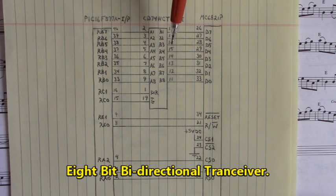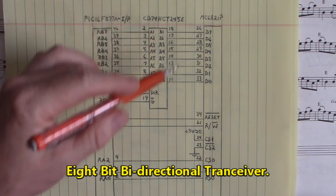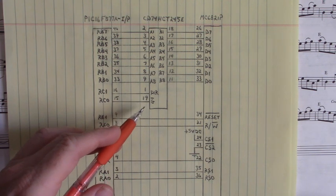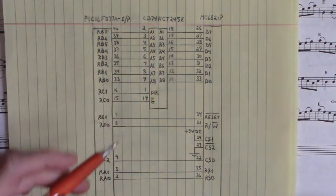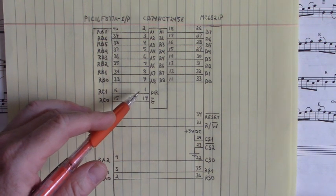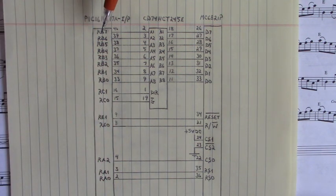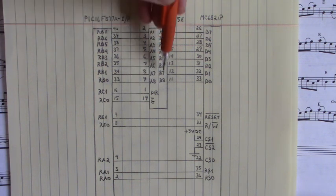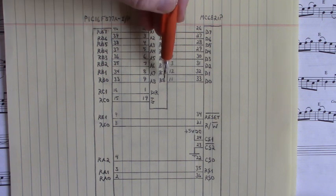As a buffer, we have a CD74HCT245E, that is a bi-directional IC. When pin 19 is low, the outputs are enabled. When pin 1 direction is high, data flows from the A side, A1 through A8, to the B side, B1 through B8.